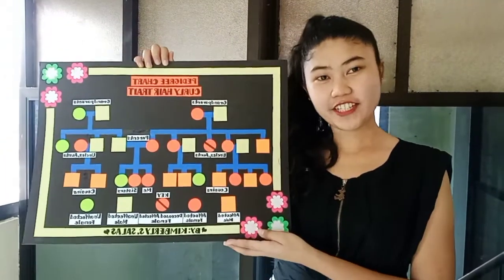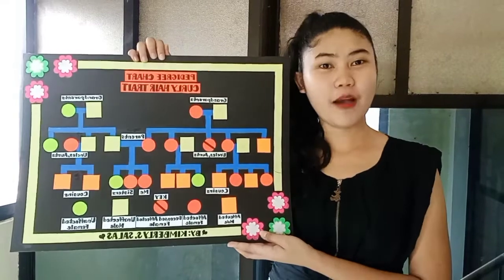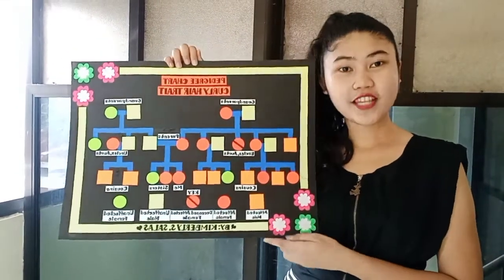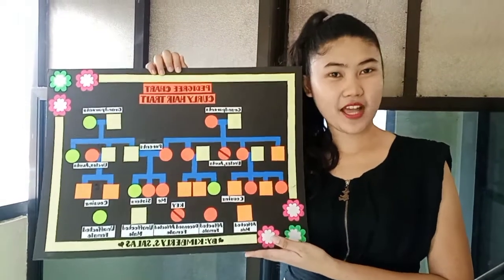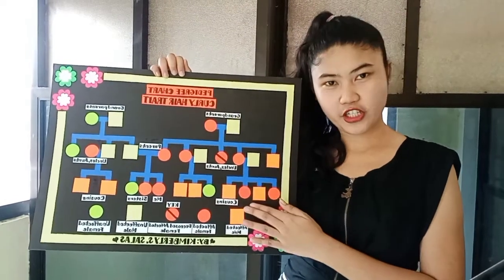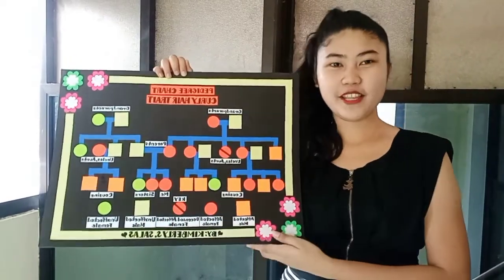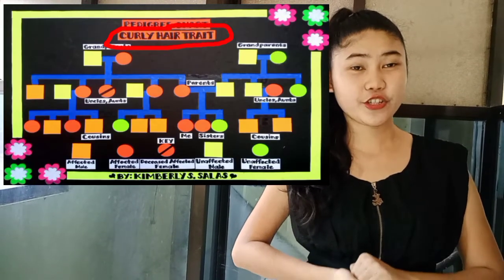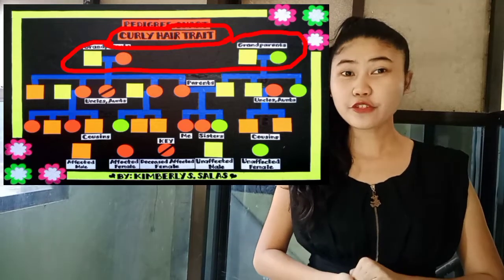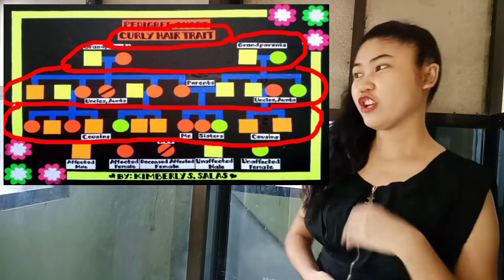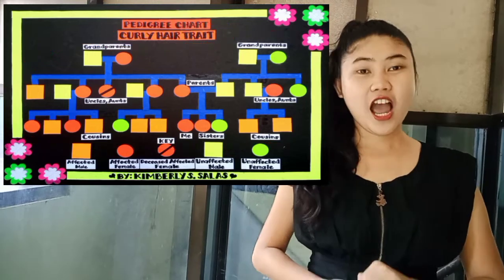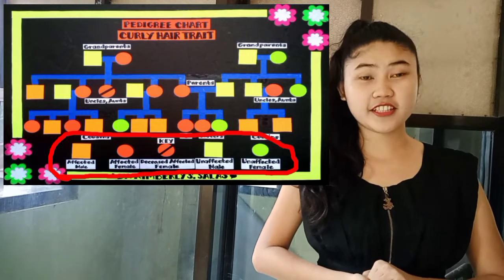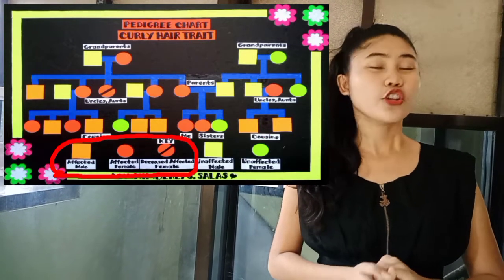A pedigree chart is similar to a family tree, but a pedigree chart shows how a trait is passed from generation to generation within a family. Before I explain how the curly hair trait passed from generation to generation within my family, I will discuss first the key to understanding the symbols in my pedigree chart.